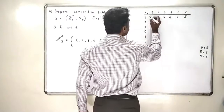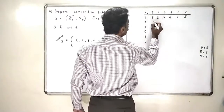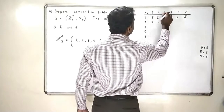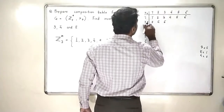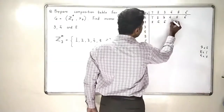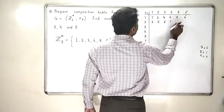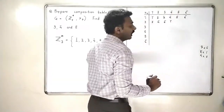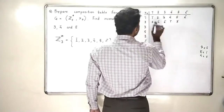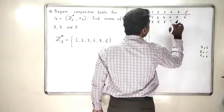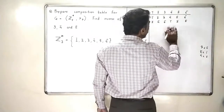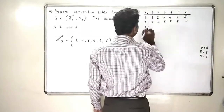Now the second line: 2-bar multiplied by all of them. 2 × 1 is 2-bar; 2 × 2 is 4-bar; 2 × 3 is 6-bar; 2 × 4 is 8-bar, but 8-bar is 1-bar; 2 × 5 is 10-bar, which becomes 3-bar; and 2 × 6 is 12-bar, which becomes 5-bar.